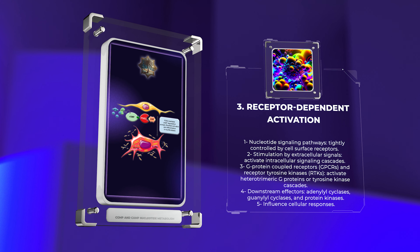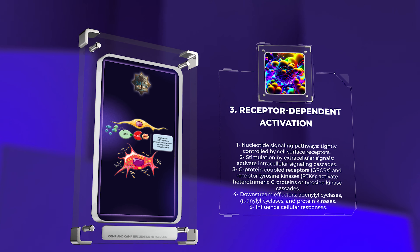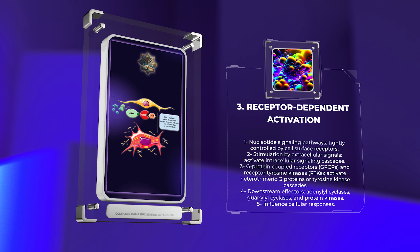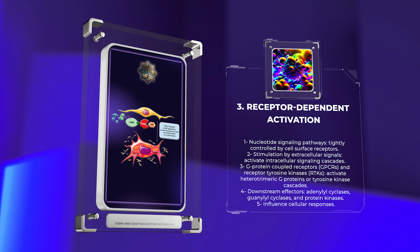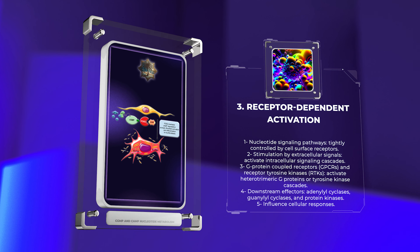Nucleotide signaling pathways are tightly controlled by a myriad of cell surface receptors. Upon stimulation by extracellular signals, such as hormones or neurotransmitters, these receptors activate intracellular signaling cascades. The activation of G-protein-coupled receptors (GPCRs) or receptor tyrosine kinases (RTKs) leads to the activation of heterotrimeric G-proteins or tyrosine kinase cascades, respectively. The downstream effectors of these pathways, including adenyl cyclases, guanyl cyclases, and protein kinases, initiate a series of events that influence cellular responses.